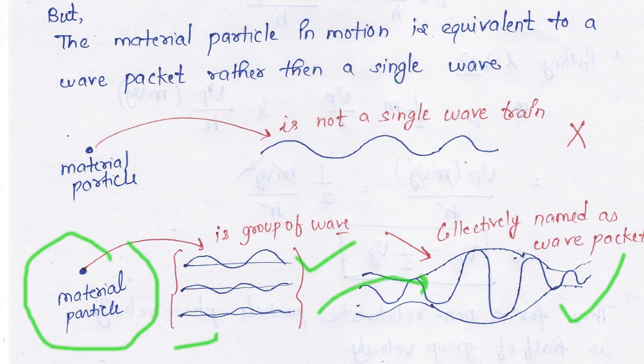The material particle in motion is equivalent to a wave packet rather than a single wave. This means the particle is associated with a wave packet, collectively named as the wave packet.